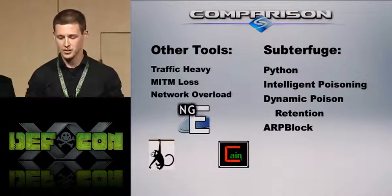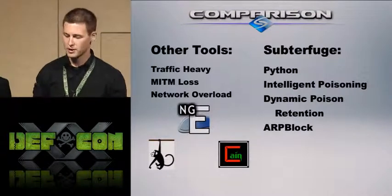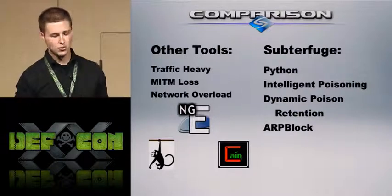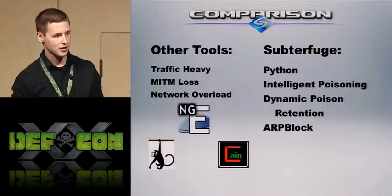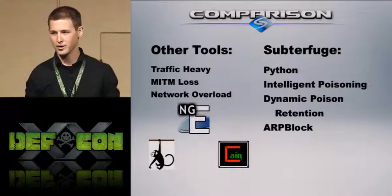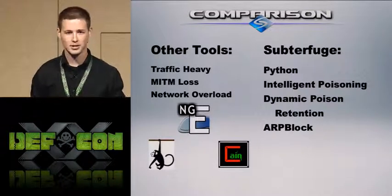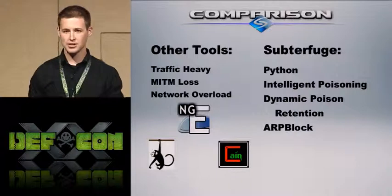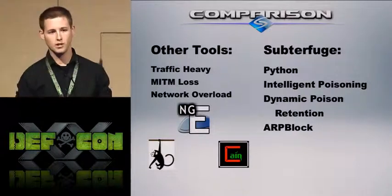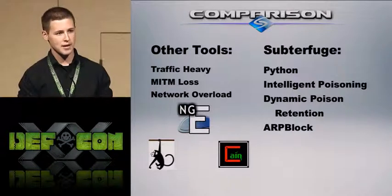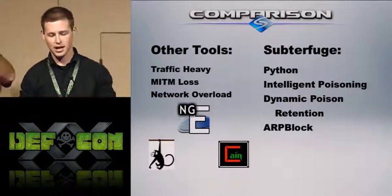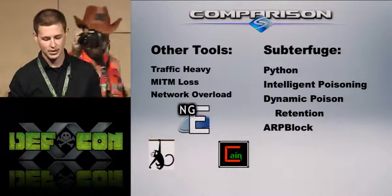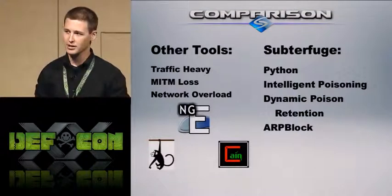I'm going to go through a comparison of other tools used for man-in-the-middle attacks right now. Other tools are spewing out ARP packets all the time — if you're on a poisoned network, you could pull up Wireshark and actually watch the sheer number of ARPs coming through and see it's probably a man-in-the-middle attack. There are also unacceptable periods of connection loss, and a lot of these tools, after running for even a short period of time, can completely overload the network and make it crash.